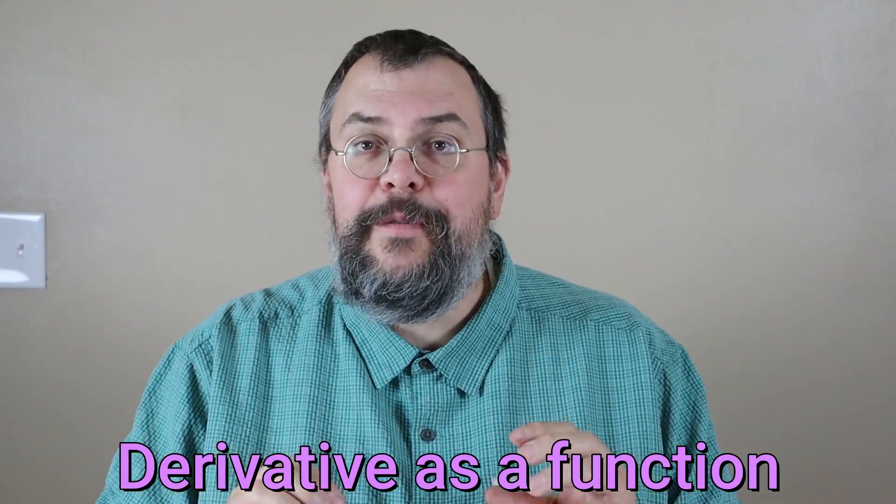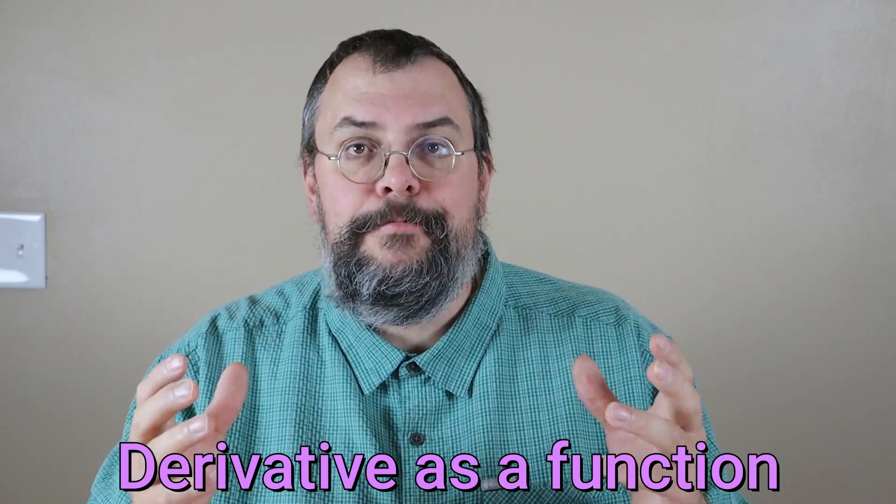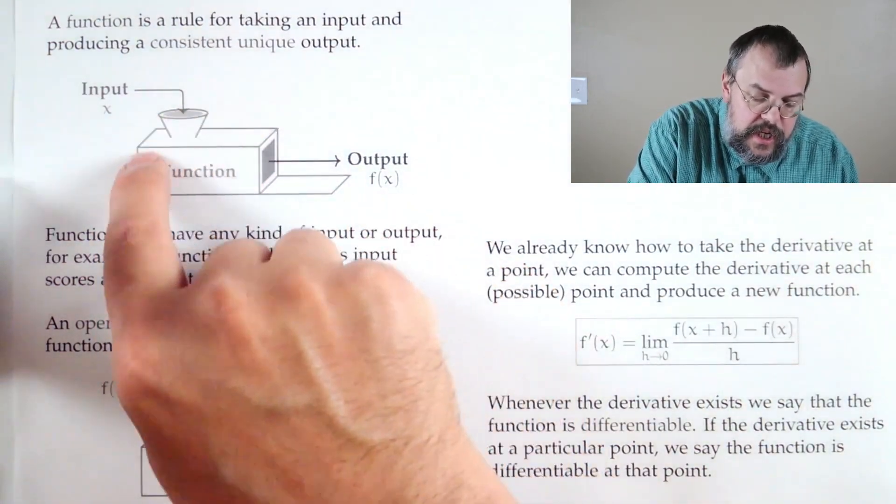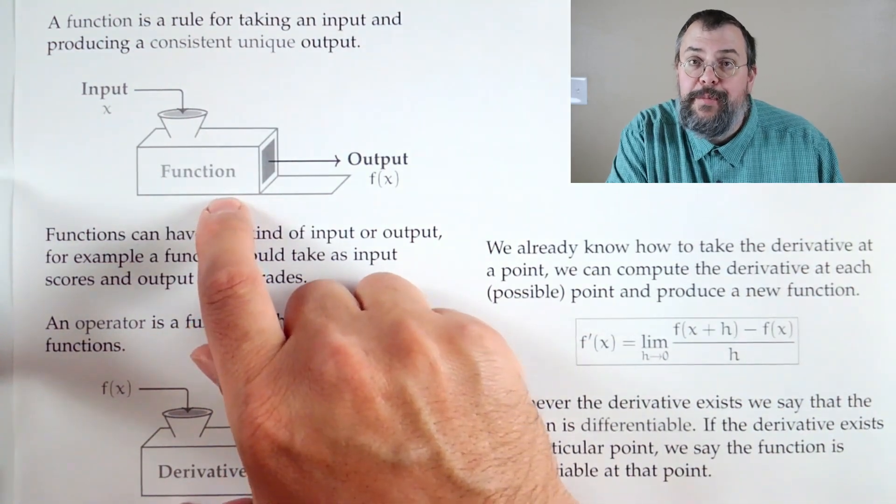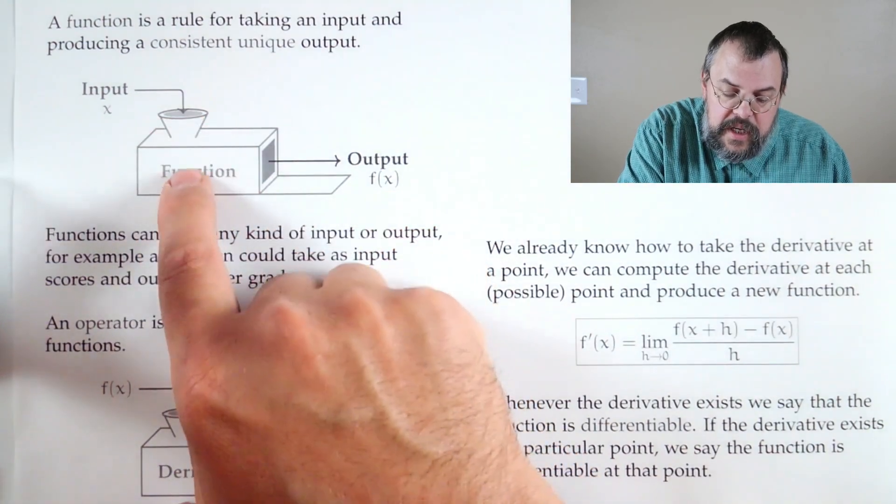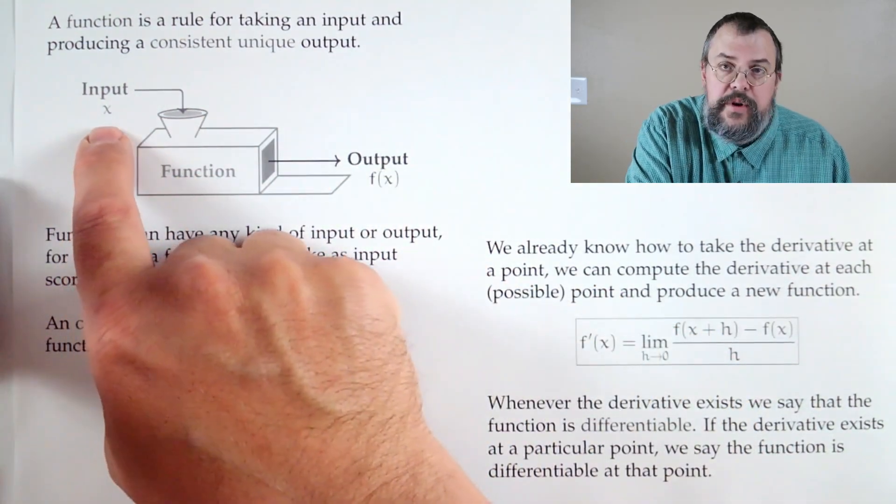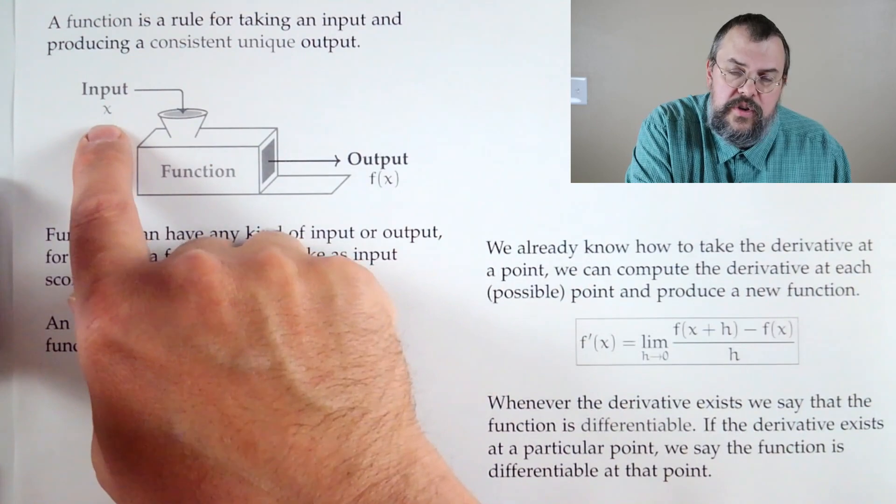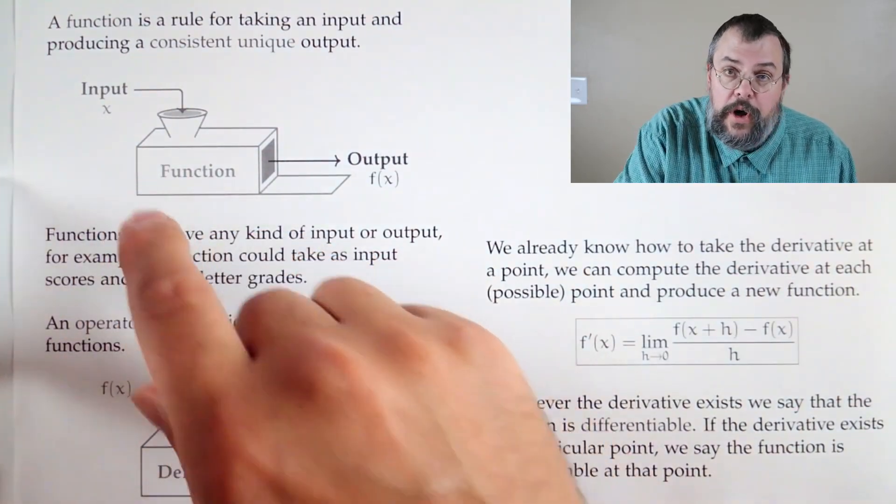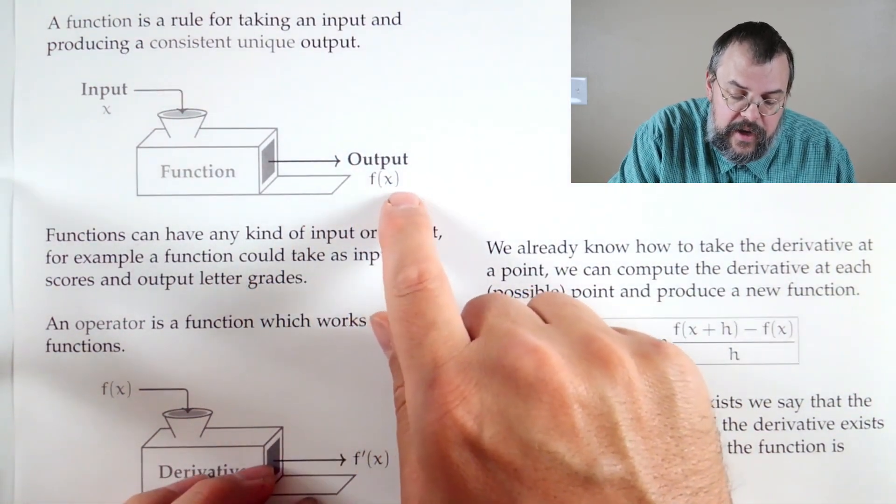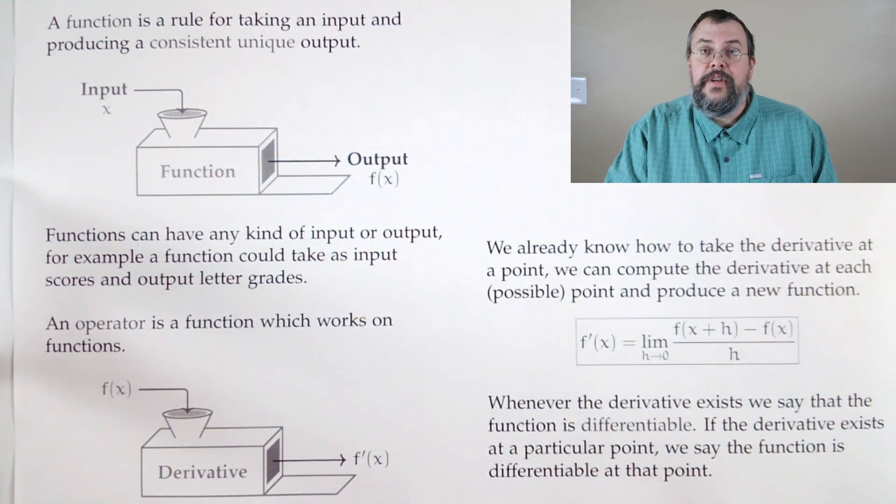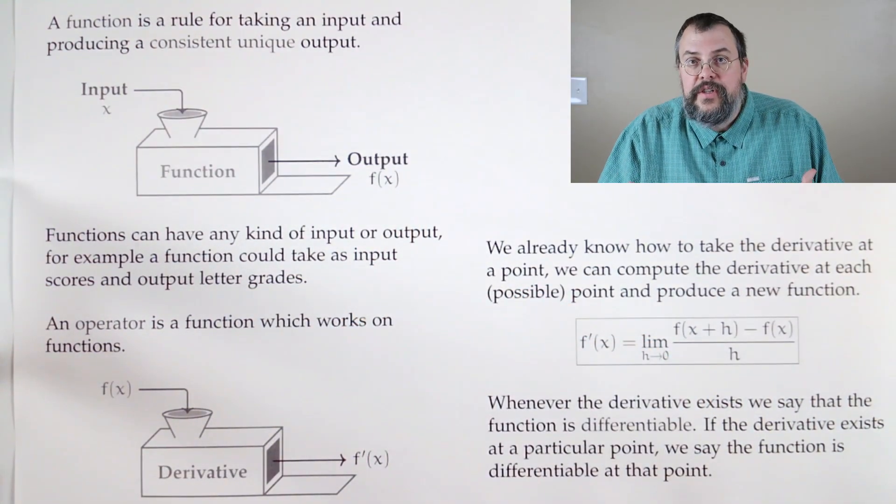So let's step back for a second and recall what functions are. Now a function is what? I like to think of it as sort of this machine. Sometimes it's a black box because we don't know what it is. But the most important thing is that you put something in and you get something out. So oftentimes we call our input x. Usually when we say x, it's sort of like some unknown or unassigned quantity, value. Output is f of x. So in other words, the result of running x through our function.